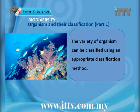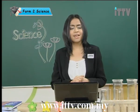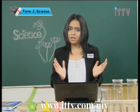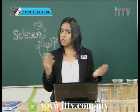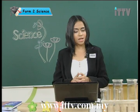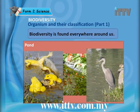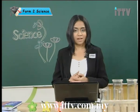The variety of organisms can be classified using an appropriate classification method. Biodiversity is found all around earth. On earth we have different climates and different weather, so we have different types of places and habitats. Have a look at the animals and plants you can find in a normal pond — frogs, fishes, water lilies and other plants. This is known as the pond's diversity.